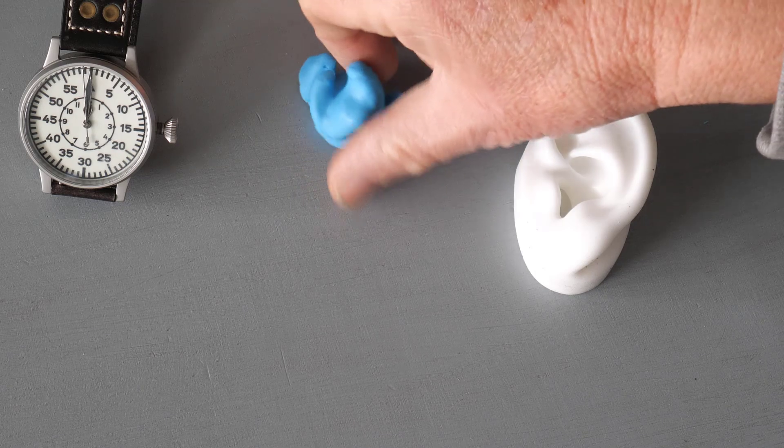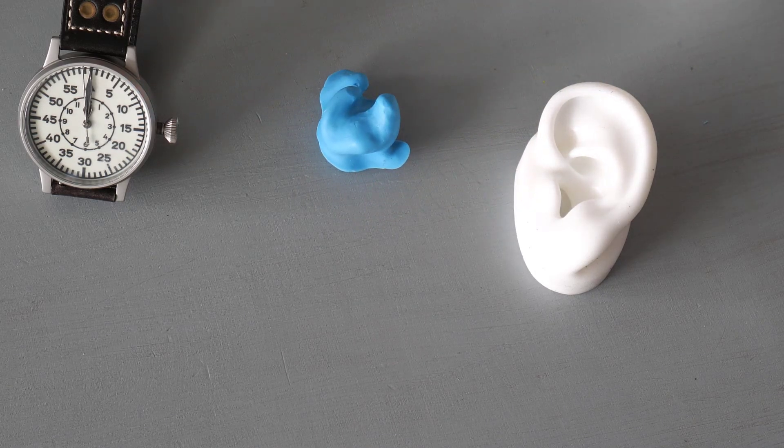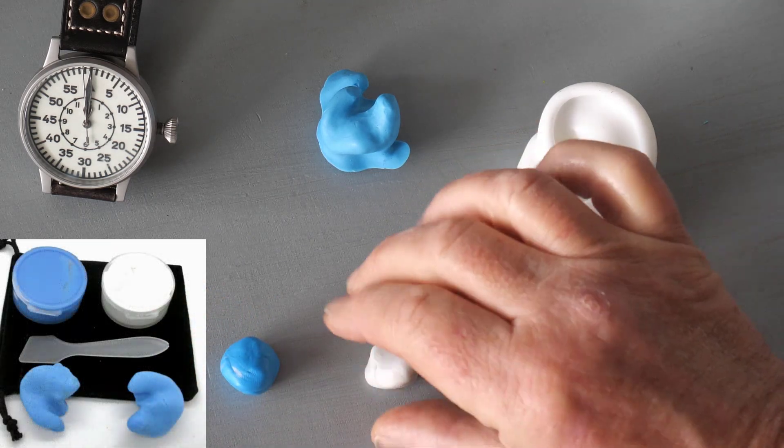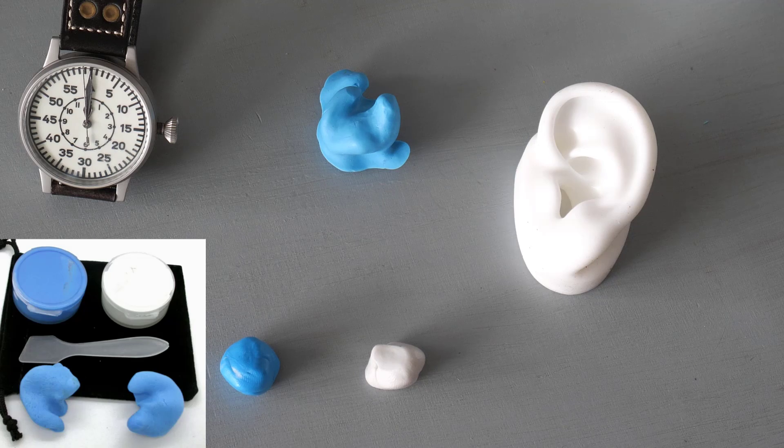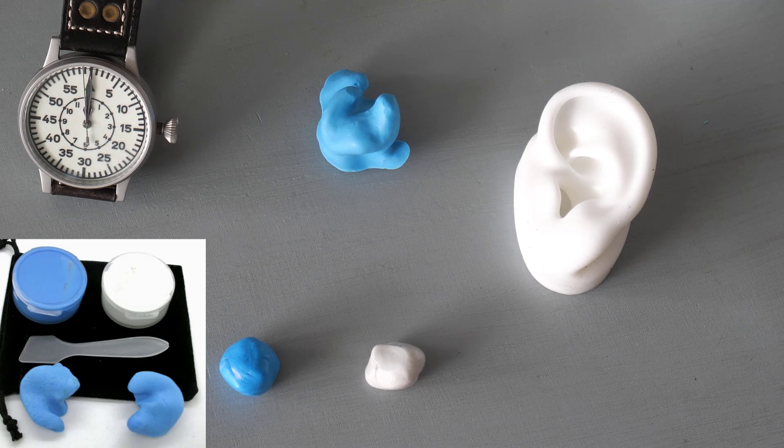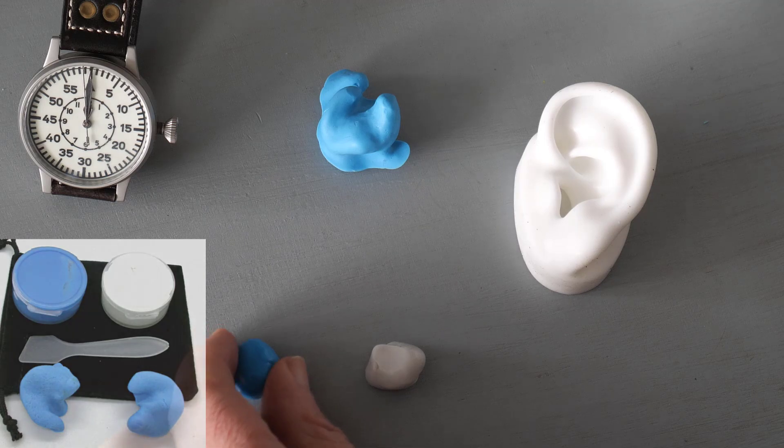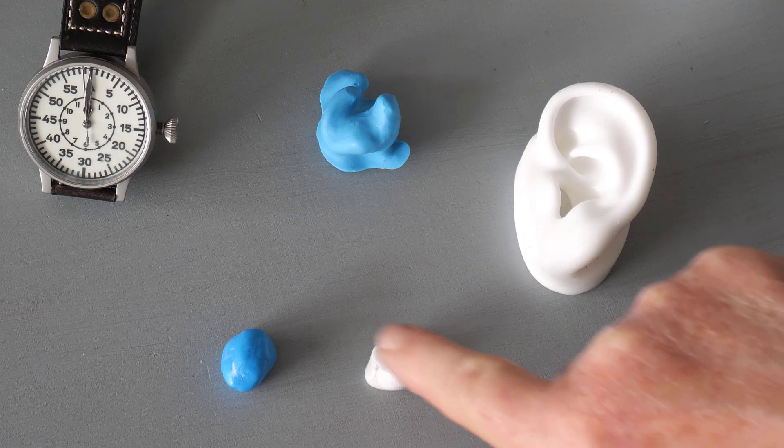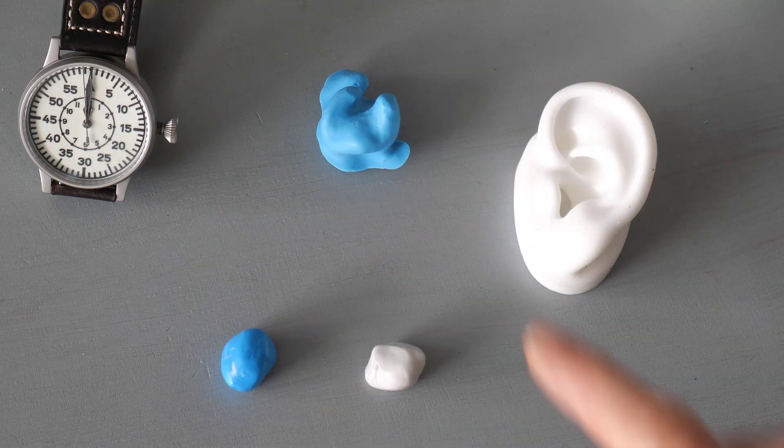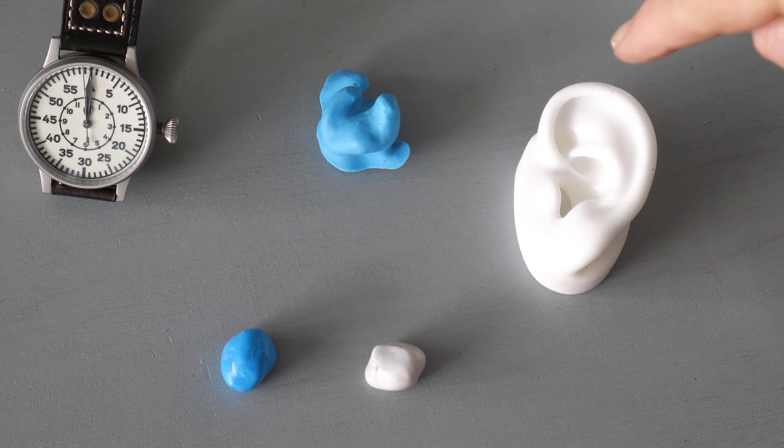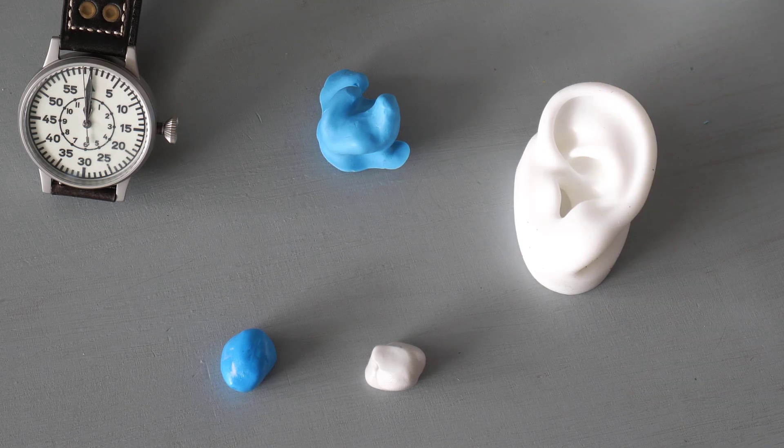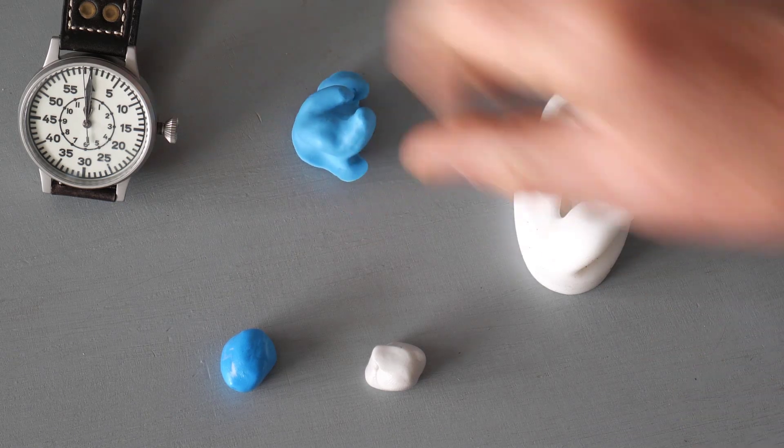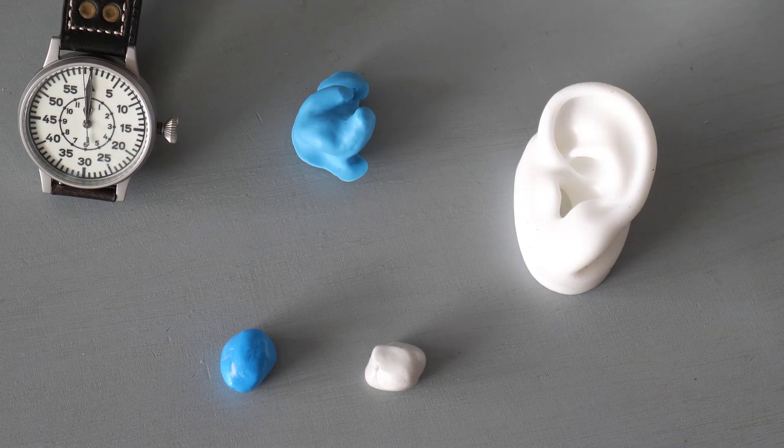Here I show you one of my molds from yesterday and now I have here two doses of my two component silicon. This comes as a darker blue and as white. I will mix it until it gets this color, then I fill it into the ear, wait about 5 minutes and at the end we have a, I hope, perfect mold.